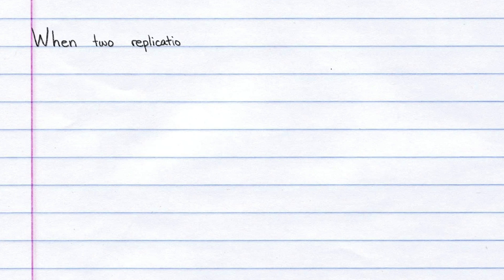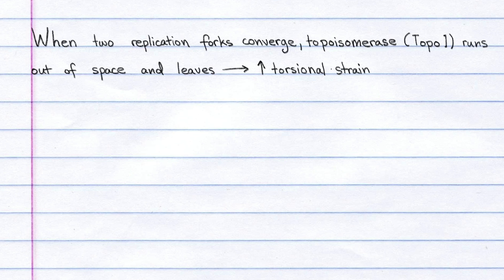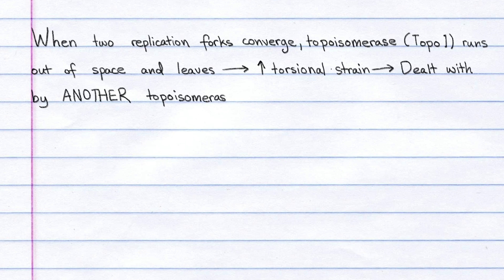When two replication forks converge, topoisomerase, or topo-1, runs out of space to act and leaves. The ensuing buildup of torsional strain gets transmitted behind the replication forks, and this is dealt with by another topoisomerase, topo-2.